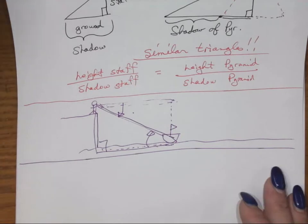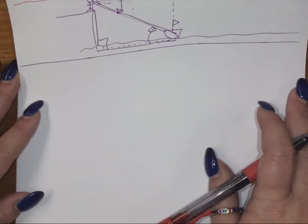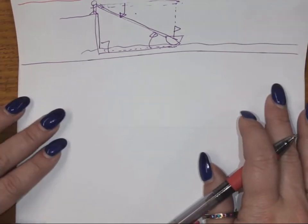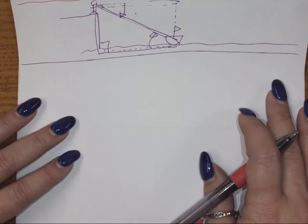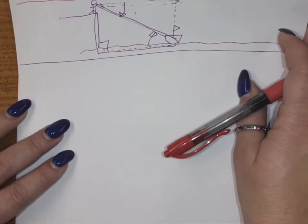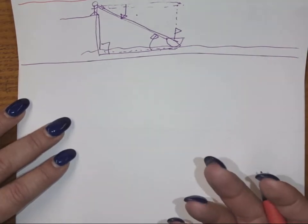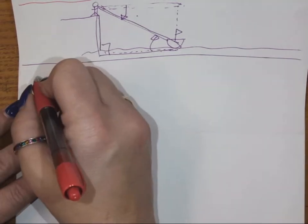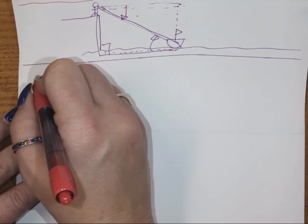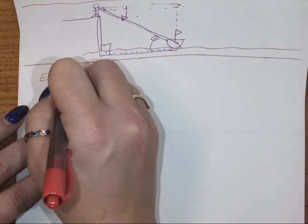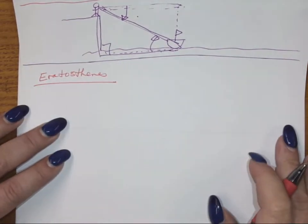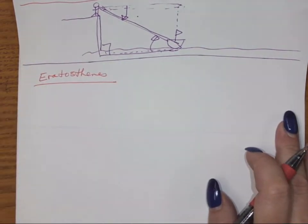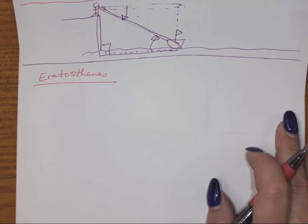Put Thales in your notes — he will almost certainly appear on the first test before spring break, probably as a matching or multiple choice question. You should know his quote 'Know thyself,' that he dealt with distances and similar triangles, and his approximate dates. There are many mathematicians coming up, so index cards might be a good idea.